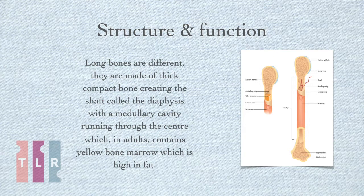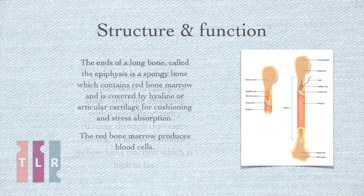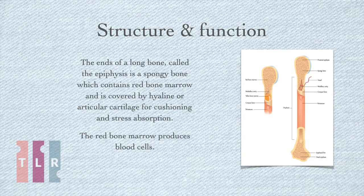Long bones are different. They are made of thick, compact bone creating the shaft called the diaphysis, with a medullary cavity running through the centre, which in adults contains yellow bone marrow that is high in fat. The ends of a long bone, called the epiphysis, is spongy bone which contains red bone marrow and is covered by hyaline or articular cartilage for cushioning and stress absorption. The red bone marrow produces blood cells.